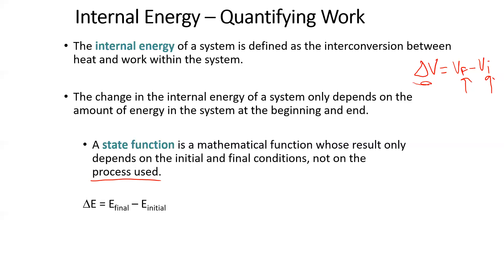So the change in internal energy within a system is energy of the final system minus energy of the initial system. Now, when we talk about systems in chemistry, what we're really referring to is the reaction. So when we talk about the internal energy of a reaction, the system, we're looking final minus initial. So we're looking at the energy of the products minus the energy of the reactants.